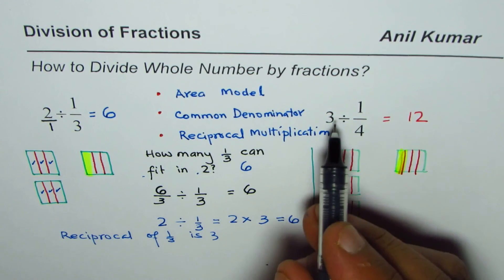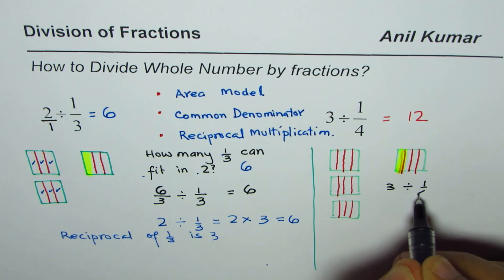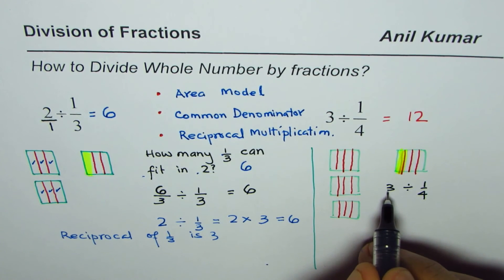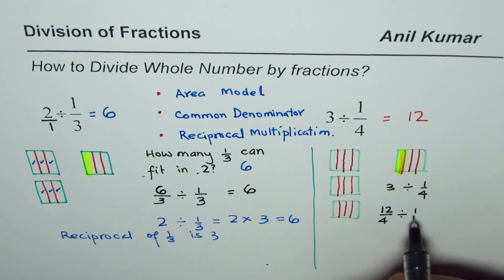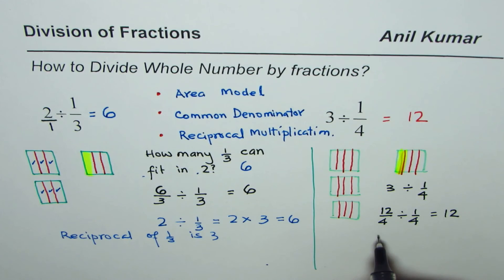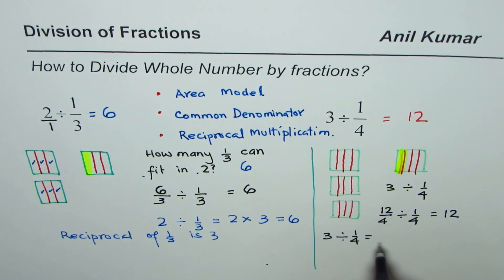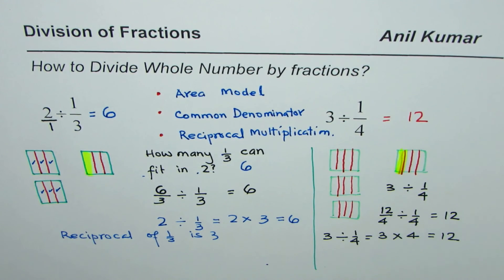For the common denominator strategy, we write 3 divided by 1/4 with a common denominator of 4: that is 12/4 divided by 1/4. Twelve divided by 1 is 12. For the reciprocal strategy, we write 3 divided by 1/4 as 3 times 4, which also gives 12. All three strategies give you the same result.